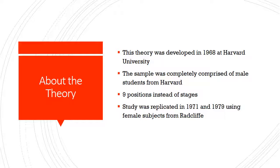About the Theory. This theory was developed in 1968 at Harvard University using a sample completely comprised of male students that attended Harvard. In this theory, he uses nine positions instead of stages, and he believes that development occurs between stages and on a continuum. Perry chose positions over stages for three reasons: one is because position makes no assumption about duration; two is individuals may demonstrate some range in structures at any given time; and three is position is consistent with the point of view individuals use as a lens to examine the world in general.